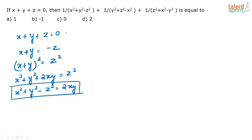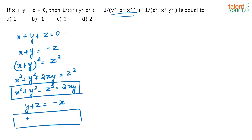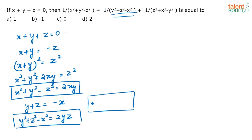Similarly, we can extrapolate. Since y + z = -x, squaring both sides gives y² + z² - x² = -2yz. And if z + x = -y, then squaring gives z² + x² - y² = -2zx. So we now have all three substitutions.